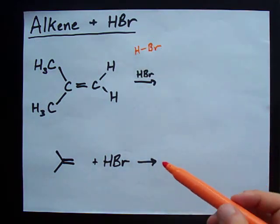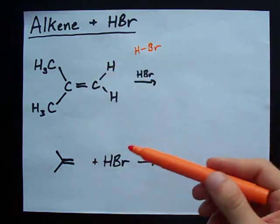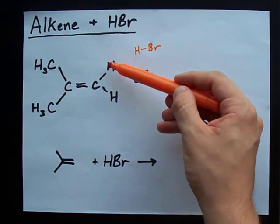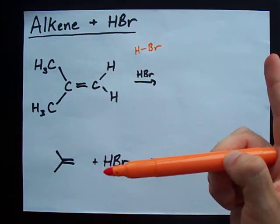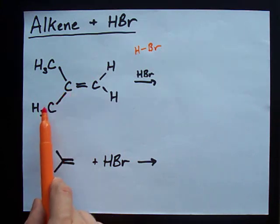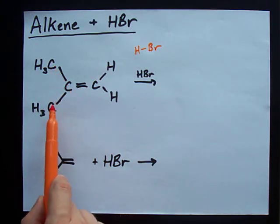The only trick you need to know is that the H attaches to whichever carbon already has the most H's attached to it. This carbon has an H and an H, that's two H's attached directly to it. This carbon doesn't have any H's attached directly to it.